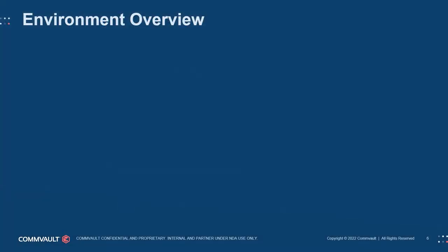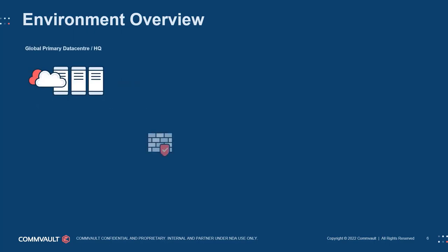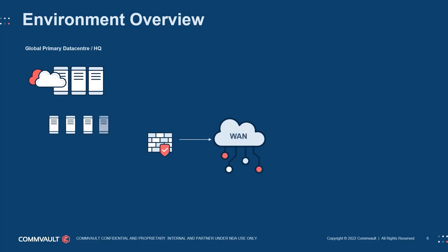Rather than asking a customer to describe their whole environment, begin your discovery with some simple, targeted questions. There really is no such thing as a typical environment, but let's look at an example. Start by asking the customer how many sites exist within their environment — a site being any location where data needs to be protected, where protected data will reside, and where data needs to be accessed. In this example, we have an active or primary data center environment that hosts any kind of production workload. This could be a company headquarters, a rented data center, or even hosted with a service provider. It is worthwhile to understand what type of data center services need protecting at the site, such as databases and applications including custom applications, file servers including NAS, ERP, CRM, web applications, mainframes, and so on.